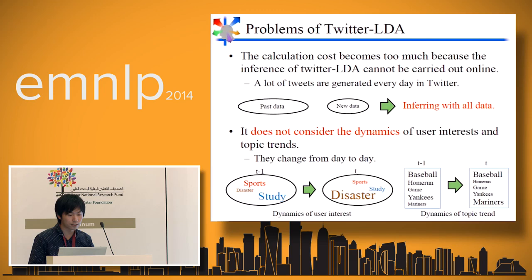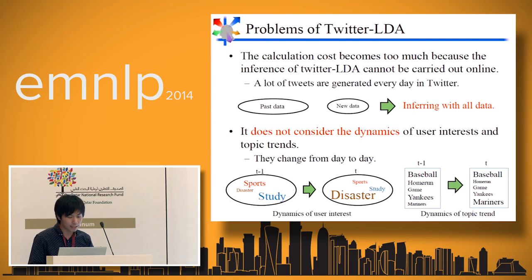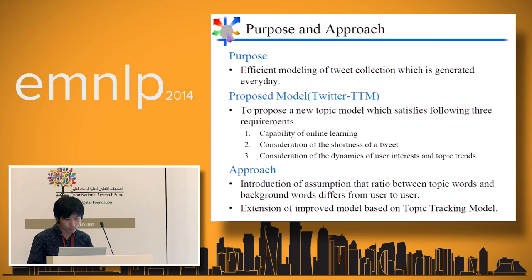In this slide, I'll talk about the problems of Twitter LDA. In Twitter, a lot of tweets are generated every day. When new data arrives, Twitter LDA must infer with old data including past data, so the calculation cost becomes too high. The second problem is that it does not consider the dynamics of user interest and topic trends, although they change from day to day.